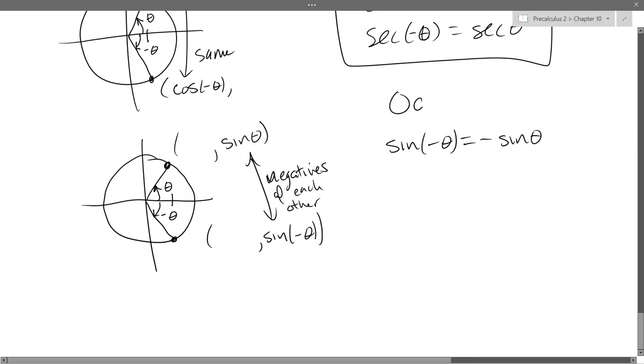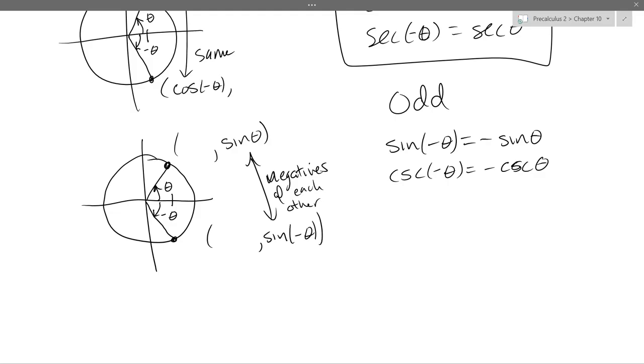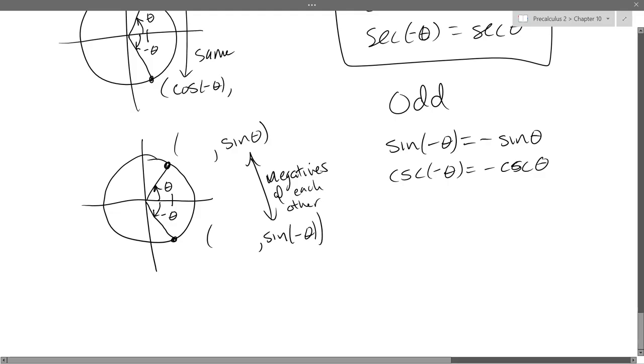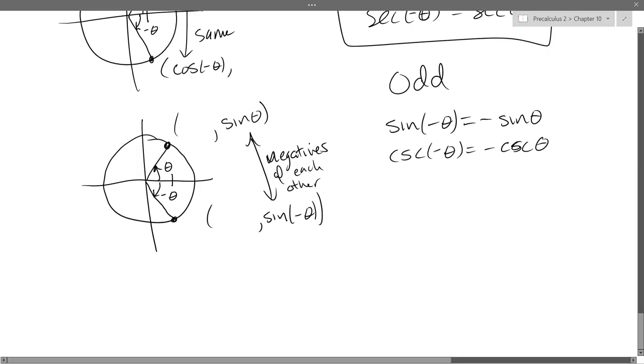So that means sine of negative theta is negative sine theta. And these are odd properties right here that we're writing down. So sine negative theta is negative sine theta. The reciprocal cosecant negative theta is negative cosecant theta. So if you're an algebra person, not a geometry person, we'll do tangent in an algebraic way. You could do tangent in a geometric way. You just have to think about y over x at the same time. So you have to keep two things in your head at the same time. We'll just go algebraic instead.